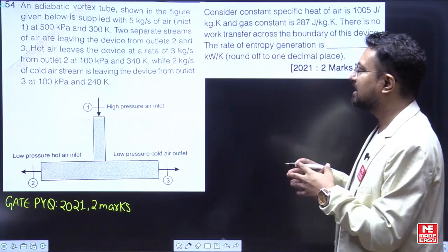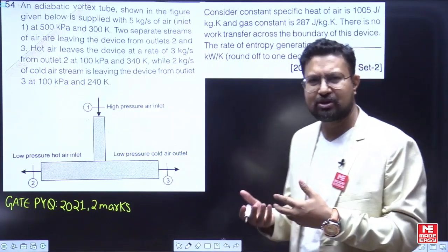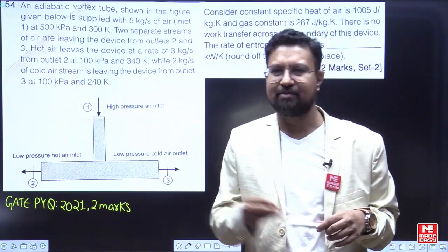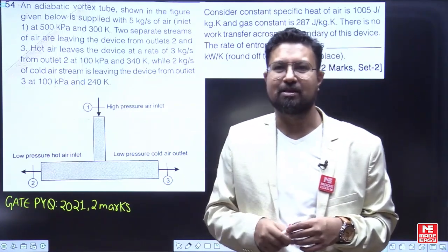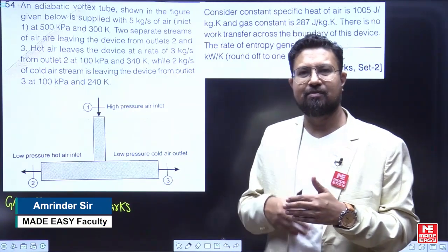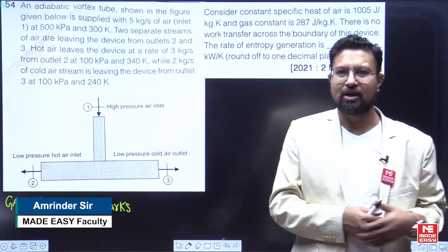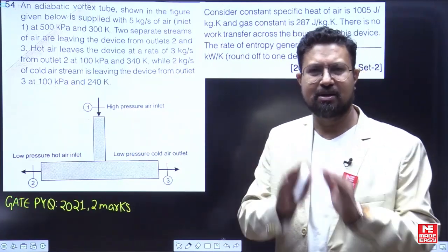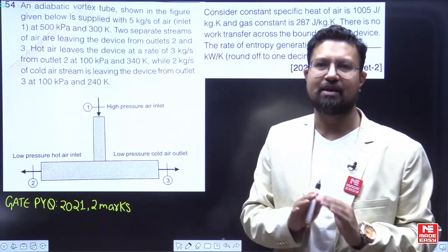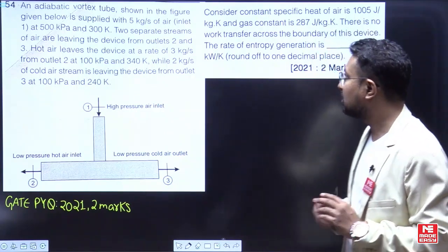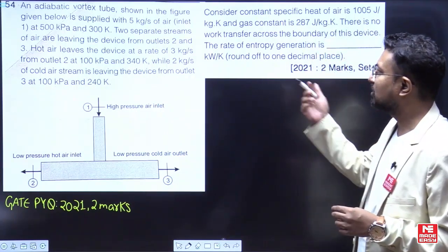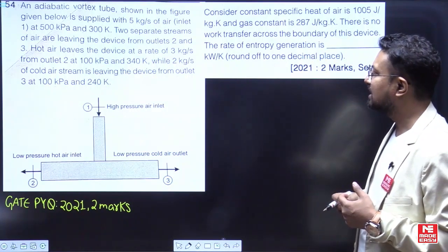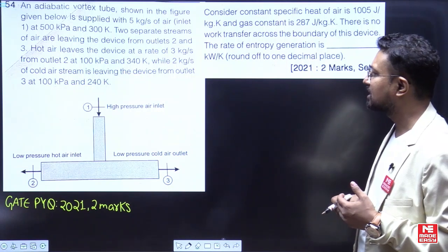There is an adiabatic vortex tube. A vortex tube is a simple refrigeration equipment in which high pressure air is supplied and we get two streams of air — one cold and one hot stream. This is the device we have to analyze. The vortex tube shown in the figure is supplied with 5 kilograms per second of air.